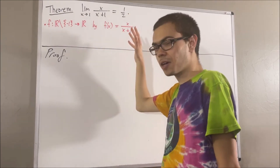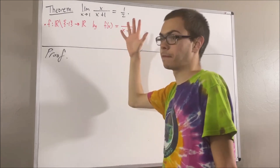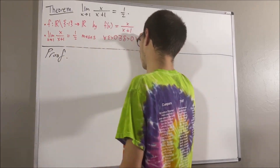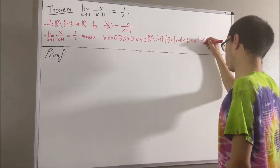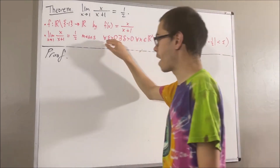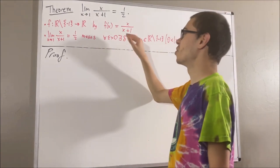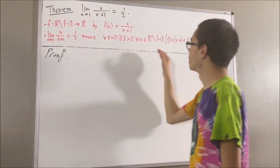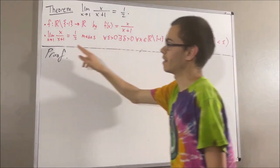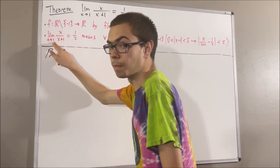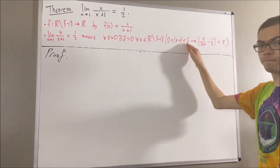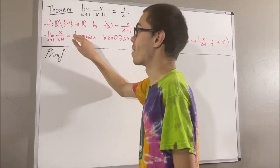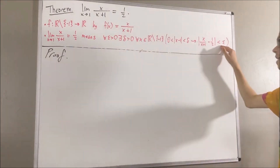What does that mean? Well, by the epsilon-delta definition of the limit of a function, it means the following: for every epsilon greater than 0, there exists a delta greater than 0, such that for all x in the domain of our function, if 0 is less than the absolute value of x minus 1 is less than delta, then the absolute value of x over x plus 1 minus 1 half is less than epsilon.